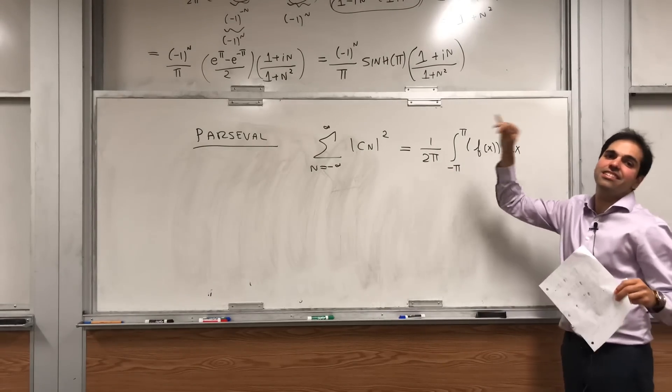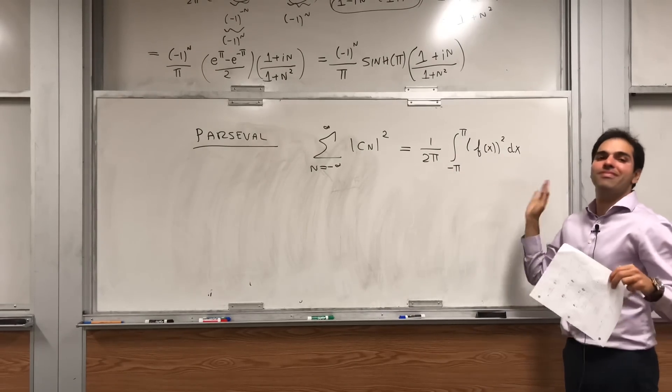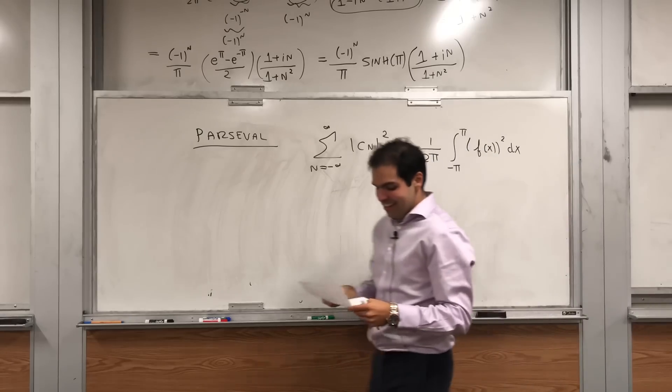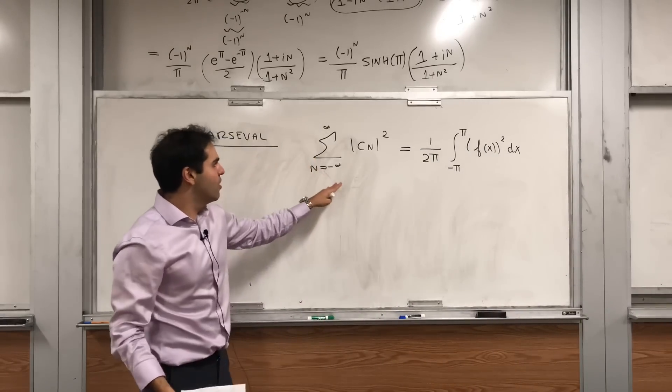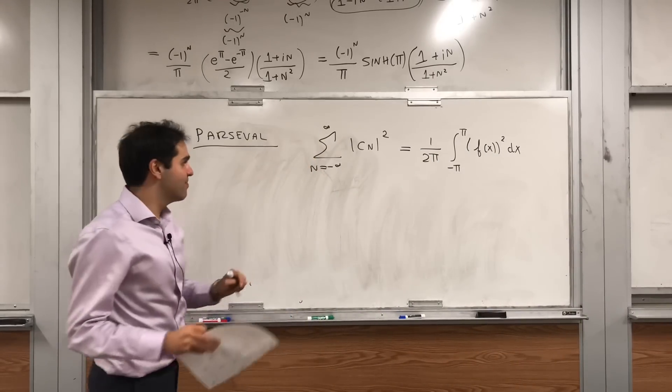In this case the function is e to the x. This is beautiful because it relates the little L2 norm — a series — with the big L2 norm — an integral. It's how we go from discrete to continuous.